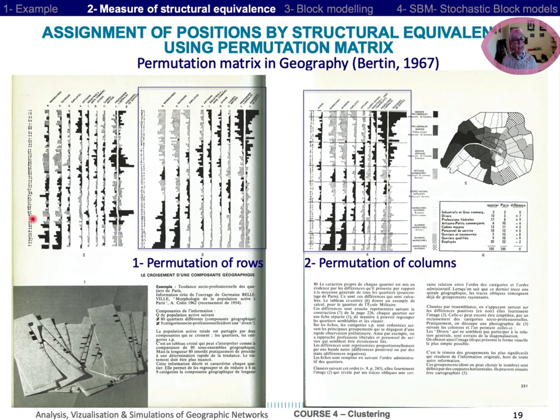So here we have the 80 quarters and the distribution of population by socio-economic factors. And Bertin made the permutation of rows, the permutation of columns, in order to obtain some quite homogeneous groups of quarters making this map.